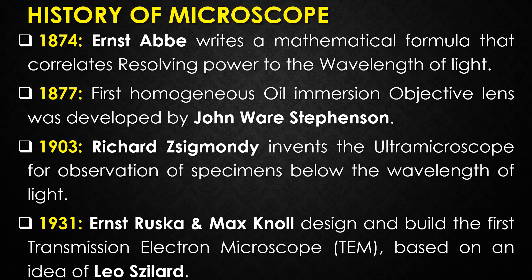In 1931, Ernst Ruska and Max Knoll designed and built the first transmission electron microscope (TEM), based on the ideas of scientist Leo Szilard. The electron microscope depends on electrons rather than light to view an object. Currently, modern transmission electron microscopes can visualize objects as small as the diameter of an atom.